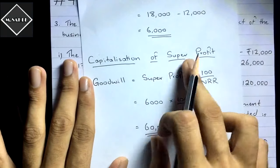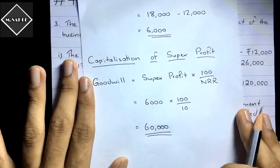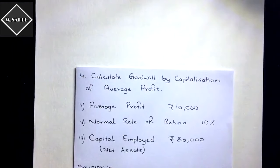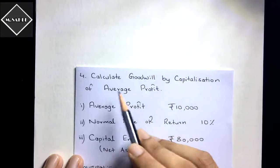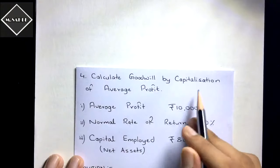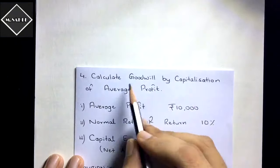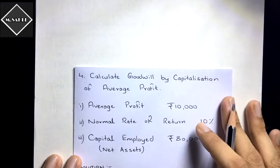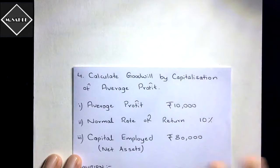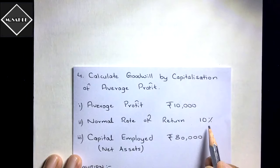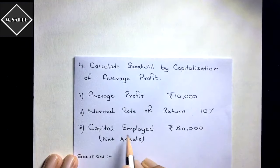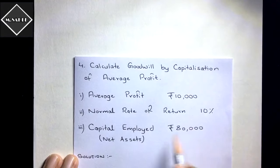Now let's see how to calculate goodwill by the capitalization of average profit method. Here is a simple problem. The average profit is already given as 10,000. The normal rate of return is 10 percent. The capital employed — this is the closing capital on the balance sheet date, also called net assets — is 80,000.